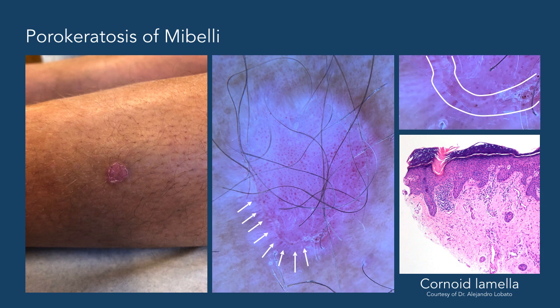The keratin rim at the periphery is due to abnormal keratinization, which can be seen in the bottom right-hand corner. Histopathologically, you can see the typical parakeratotic column, which is known as the coronoid lamella. This coronoid lamella can usually be seen clinically as a scaly ring, as you can see in the image to the left. The keratin rim is also seen in dermoscopy, and this corresponds to the coronoid lamella.